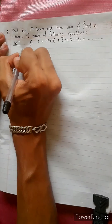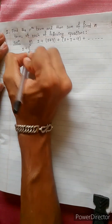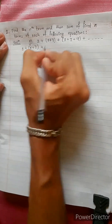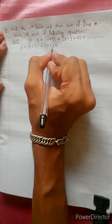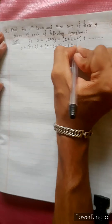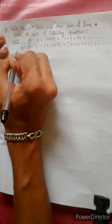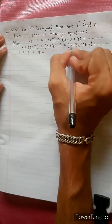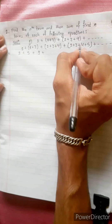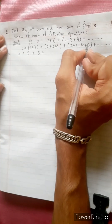Consider the sequence: 2, 5, 9, 14... We raise this question of finding the sum. The terms increase as: 2, then 2+3=5, then 5+4=9, then 9+5=14, and so on.